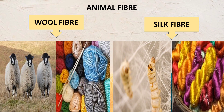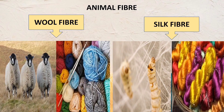Next we have animal fiber, with two examples: wool and silk. Different animals give us wool, like sheep, goat, and camels. They have a thick layer of hair on their body which works as wool, and we extract wool from them. Silk fiber comes from the silkworm; it is a very shiny and costly fiber.